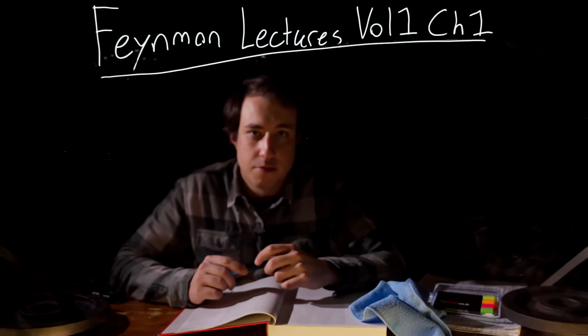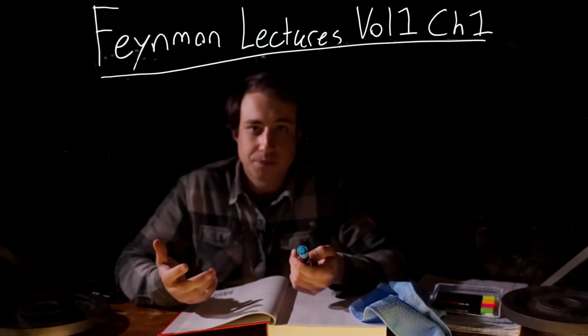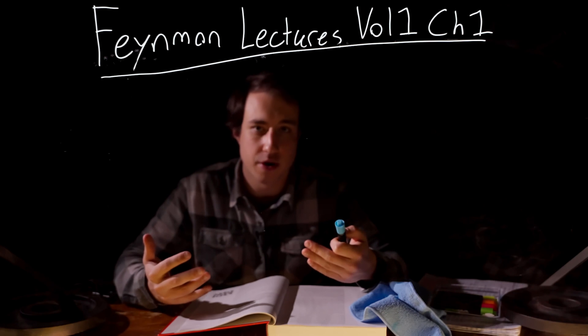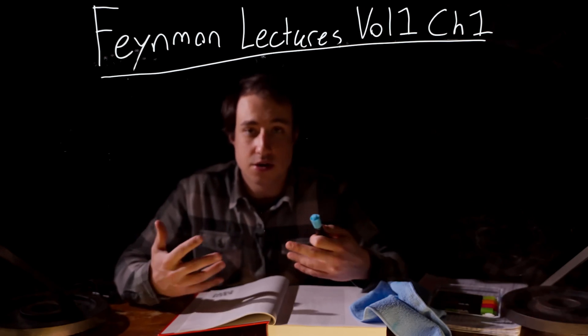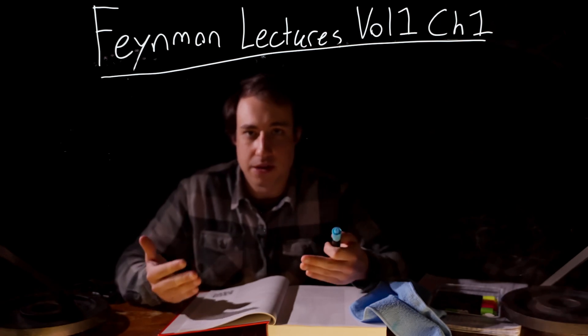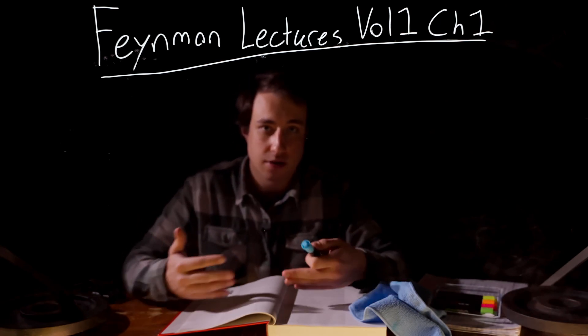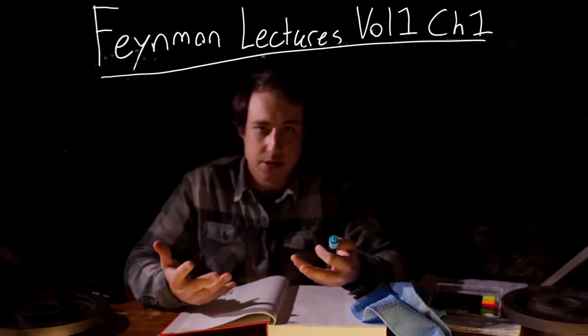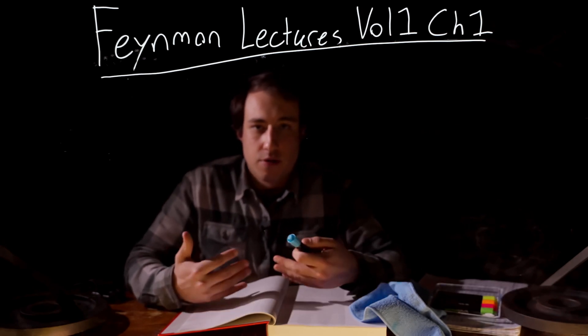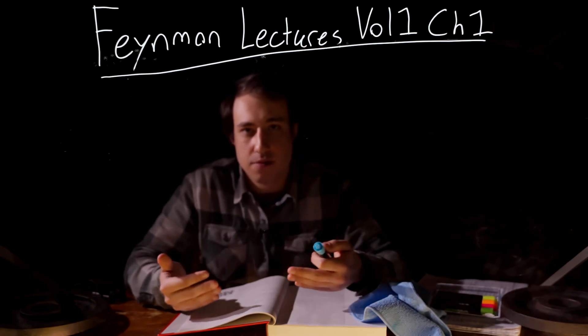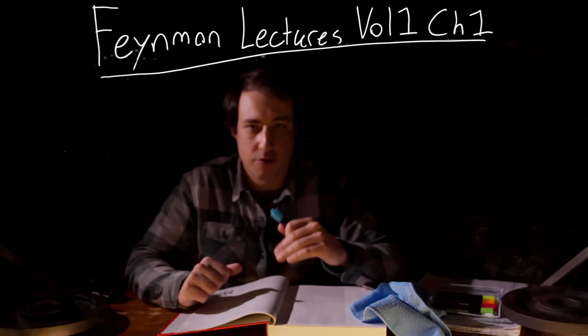Feynman starts off the book by talking about the way physics is taught, a top-down approach rather than a bottom-up approach. Unlike in something like geometry where you would start with Euclid's axioms, the most fundamental concepts, and then build all of your understanding from there, physics doesn't really work that way, at least in the way that it's taught.